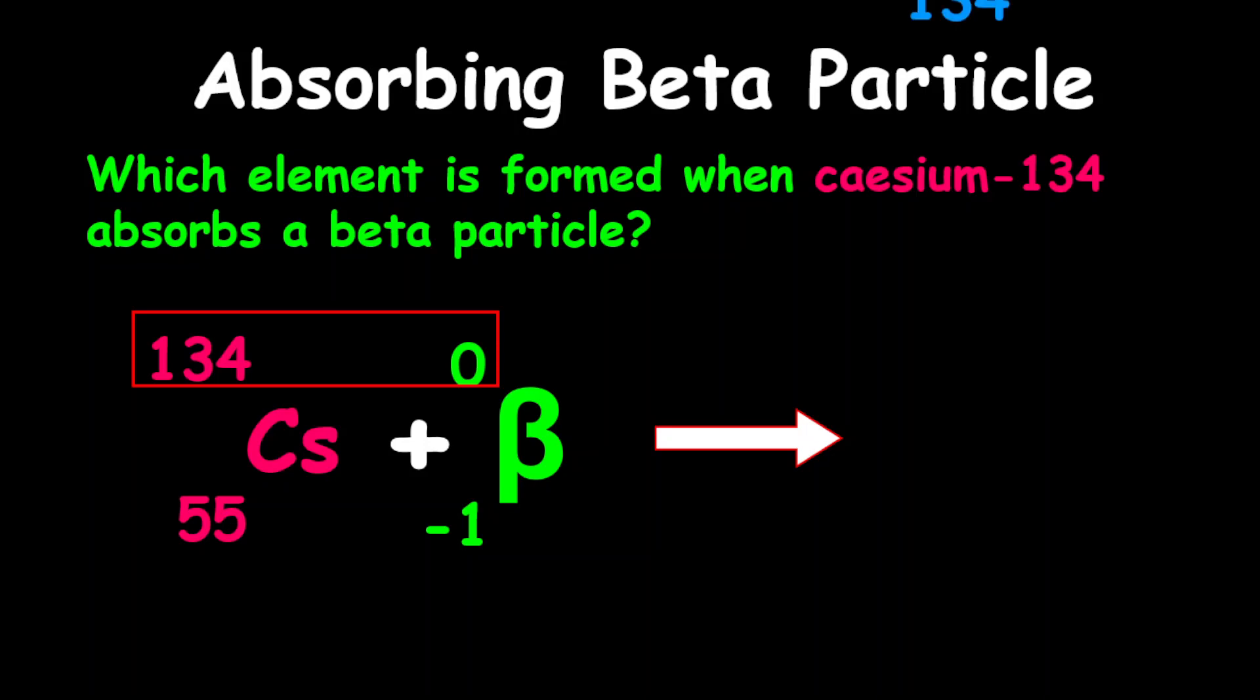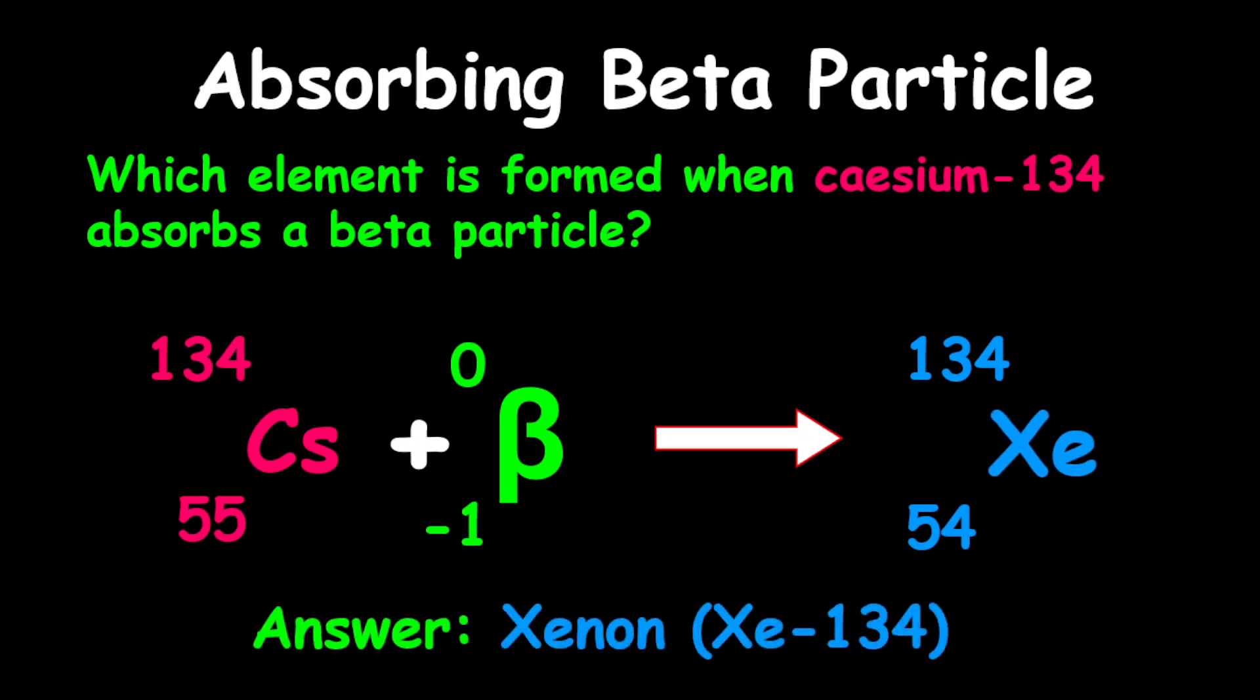However, negative 1 plus 55, what we get here is 54. If you look through your periodic table, you're going to realize that 54 is a proton number for xenon. Therefore, our answer is xenon-134.